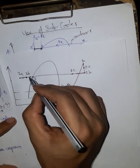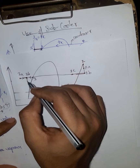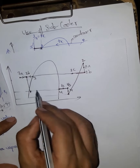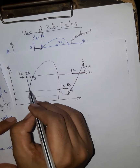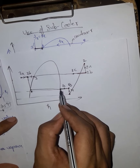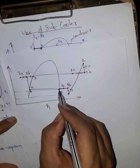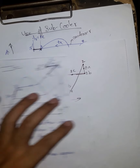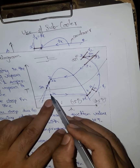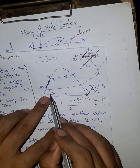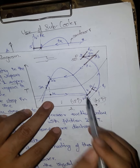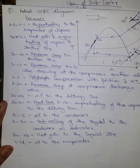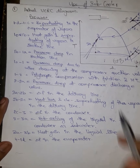From point 3b, the refrigerant undergoes throttling — an iso-enthalpic process — reaching point 4. From point 4, there is also a pressure loss in the evaporator, represented on the PH diagram as a pressure drop from 4 to the end point. So from 3b we throttle to point 4, and within the evaporator the pressure losses occur from 4 to the final evaporator exit point.